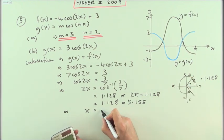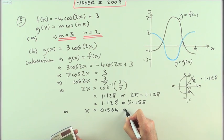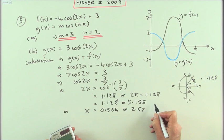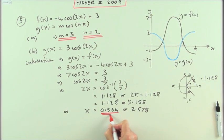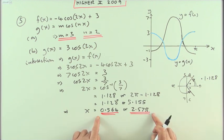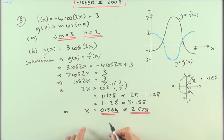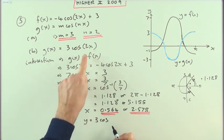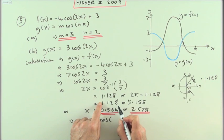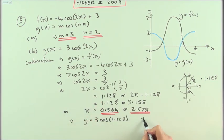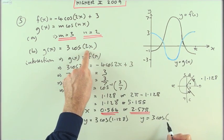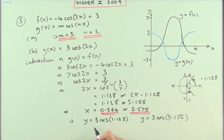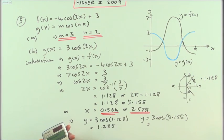Last thing is to divide by that 2 to find the x-coordinates of the points, giving 0.564 and 2.5775. It did say coordinates, so I need the y-coordinates too. I'll feed those into g(x): if x equals 0.564 then y equals 3cos of two times 0.564, which takes me back to 2x = 1.128. Similarly for the second point, y equals 3cos of two times 2.5775, which is 3cos(5.155). That gives 1.2854.